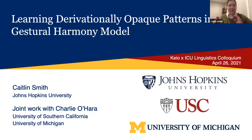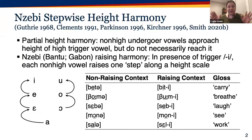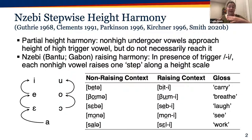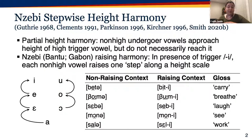Before I get started, I also want to acknowledge my collaborator, Charlie Perrin. In partial height harmony, non-high undergoer vowels are raised to approach the height of a high trigger vowel without necessarily reaching the height of that trigger vowel. So in a language with multiple vowel heights, there are multiple possible patterns that partial raising might follow.